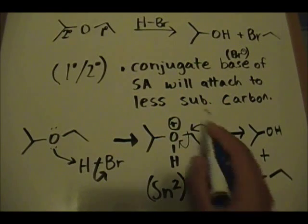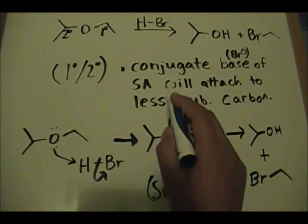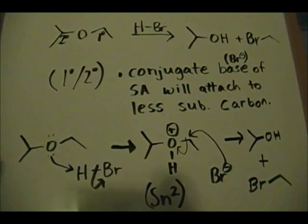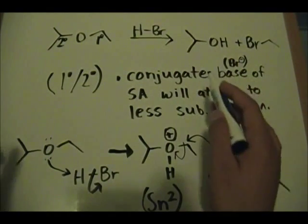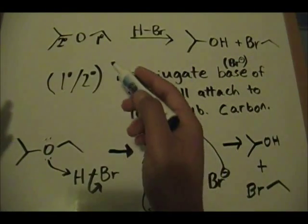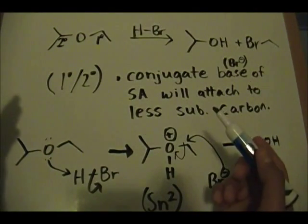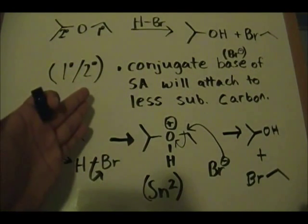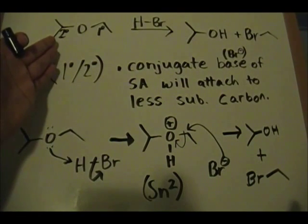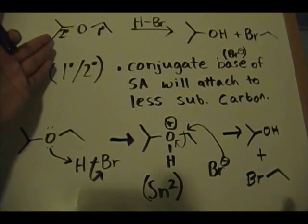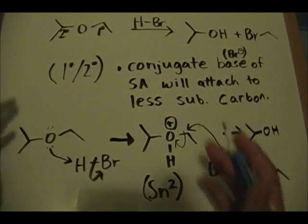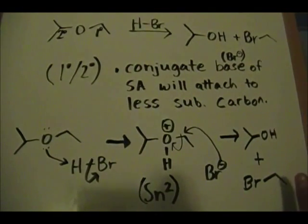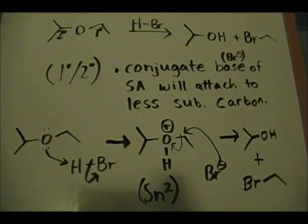This is a very important thing to know: the conjugate base of the strong acid will attach to the less substituted carbon. The bromine with a negative charge attaches to this primary carbon. This refers to primary and secondary ethers — this ether is a combination of primary and secondary but still falls into that category, not a tertiary ether.